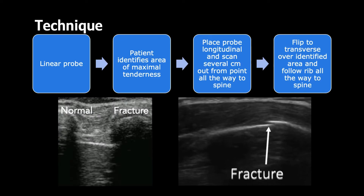How do you do it? I'll show you a video demonstration in a moment, but in words: use a linear probe because this is going to be very superficial. Have your patient identify the area of maximal tenderness, then start by placing the probe longitudinally. Scan several centimeters out from the point of maximum discomfort and then scan all the way to the spine. You can have two fractures — one at the point and one where the rib has become dislodged from the spine — so it's important to check for both. Then go back to where you started, flip to transverse over the identified area, and follow the rib all the way back to the spine.